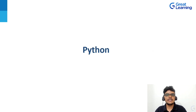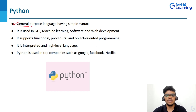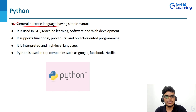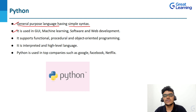So Python is a general purpose language having a simple syntax. What do we mean by general purpose language? That means you can create a variety of programs in Python and it is user-friendly. It is used in GUI, machine learning, software and web development. Python contains a massive number of libraries.